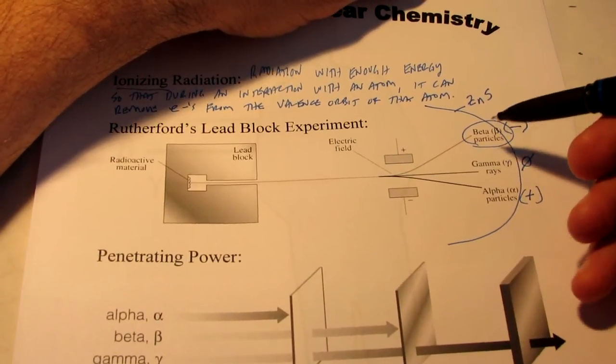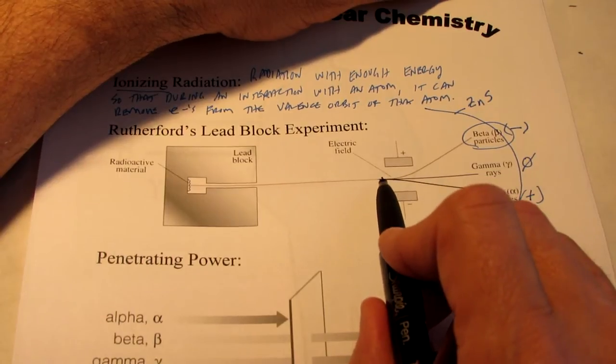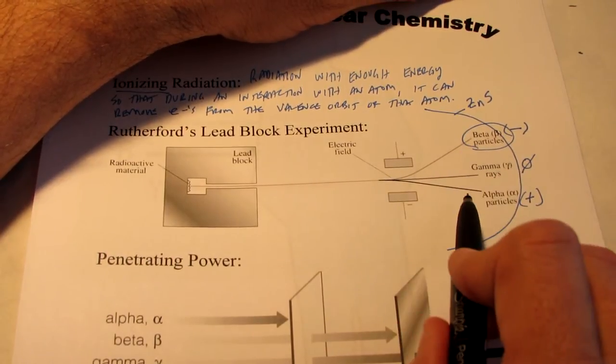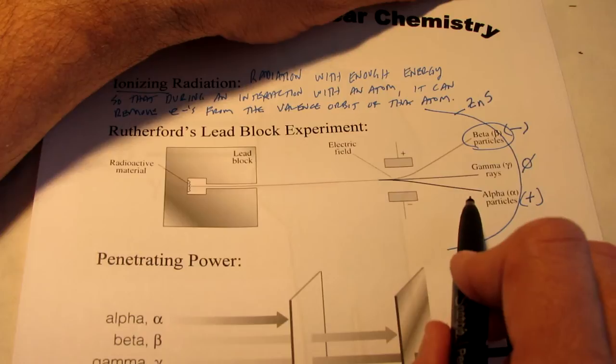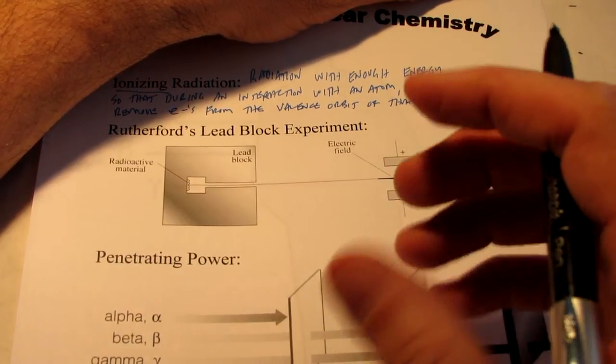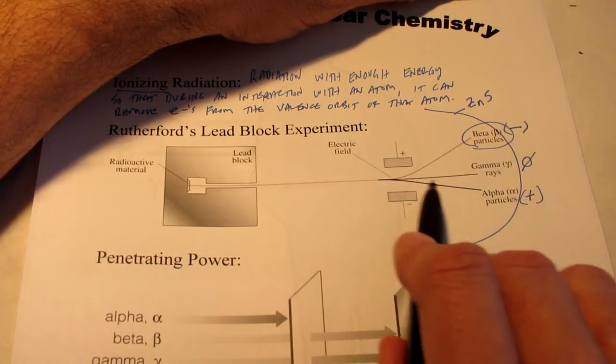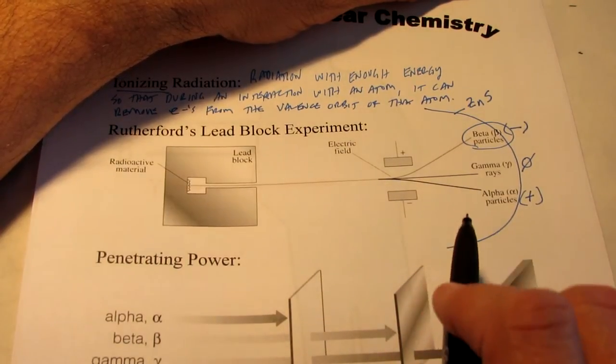Now you can see by the trackings of the beta and alpha particles that the beta particles were deflected much more so than the alphas were. That actually has something to do with the mass of the alpha particles. They're bigger, they're heavier. So as they pass through the magnetic field, they're not deflected by as much as the betas are.